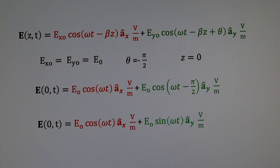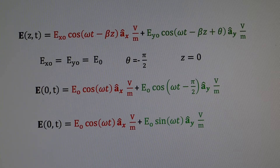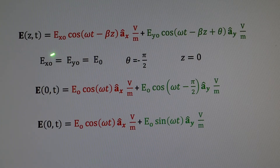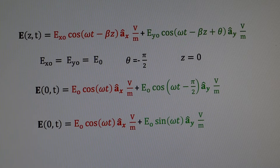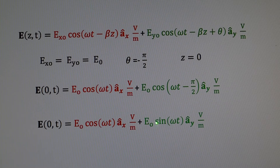Let's go back to the more general form for the electric field intensity, where we have a component in the x and the y direction, but now we can have a phase shift between those two components, indicated by angle theta. Let's let the amplitudes be the same for the two components. Let's look at the electric field intensity in the z equals zero plane, and let's let the phase shift be minus pi over two radians or minus 90 degrees. We'll use a trig identity to rewrite cosine of omega t minus pi over two as sine of omega t.